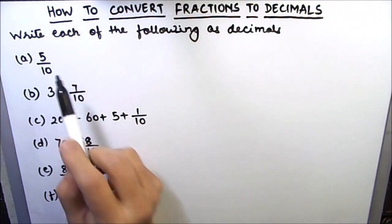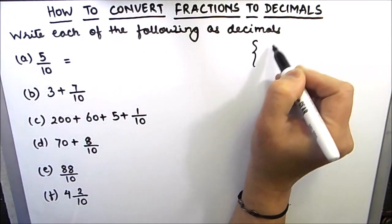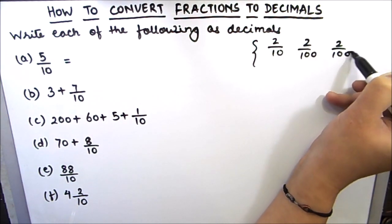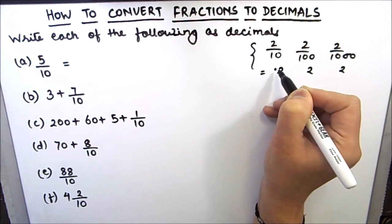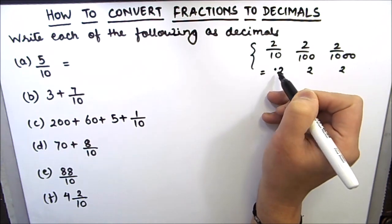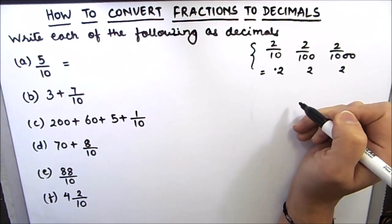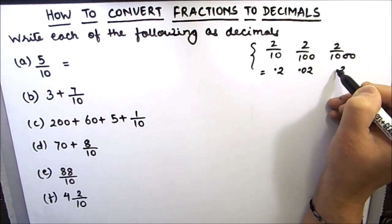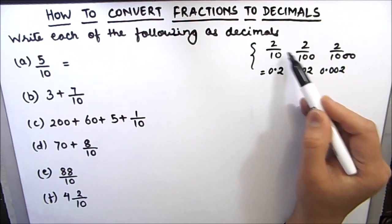So the first one is 5 by 10. We have to divide 5 by 10 and write it in decimals. We have already learned that when we divide any number by 10, 100, 1000 and so on, the answer will be the same digit with a decimal point, and the decimal point is placed in front of as many digits as there are zeros in the denominator. So here we have one zero in the denominator, so the decimal point will be to the left of a single digit in the numerator. If there are two zeros in the denominator, we place the decimal point to the left of two digits from the unit's place. With three zeros, the decimal point is placed three digits from the right. This is how we convert these types of fractions to decimals.